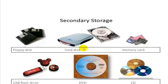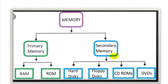Hard disk: it is another storage device. A hard disk can hold more data than a floppy disk. This is the diagram of memory — primary and secondary. Primary memory includes RAM and ROM. Secondary memory includes hard disk and floppy disks.